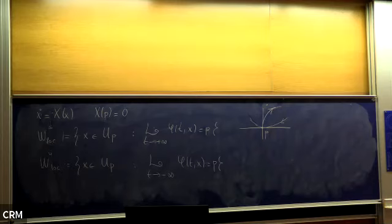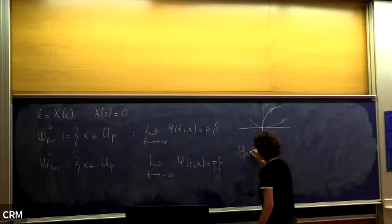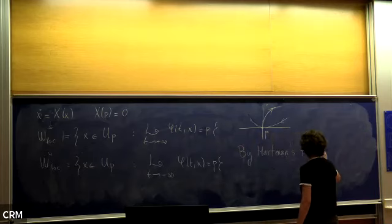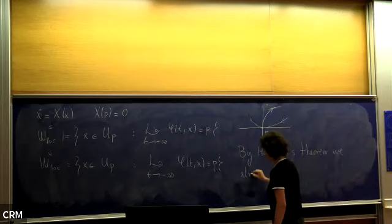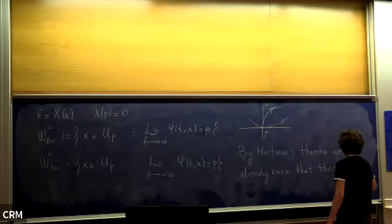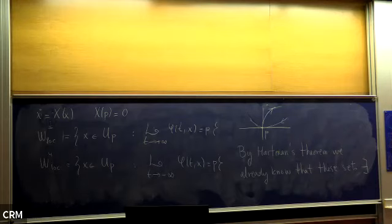We ask whether these sets exist, what regularity they have, and so on. As stated before, by the Hartman theorem, we already know that these sets exist as images of the conjugation of the stable and unstable linear sets of the linear system.